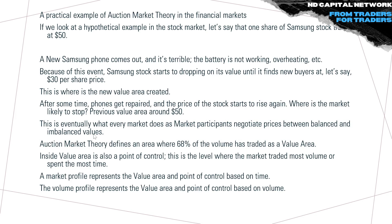This is what every market does as participants negotiate prices between balance and imbalance values. Auction market theory defines the area where 68 percent of volume has traded as the Value Area. Inside the value area is also the Point of Control (POC) — the level where the market has traded most of the volume or spent most of the time. Market Profile measures this using TPO (time), while Volume Profile measures it using volume.